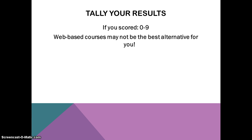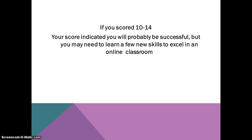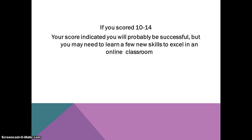Okay, now tally up your results. Count how many times you answered yes and we're going to see how you rate. If you scored 0 to 9, web-based courses may not be the best alternative for you — you might be more suited to a traditional classroom setting. If you scored 10 to 14, your score indicates you'll probably be successful, but you may need to learn a few new skills to excel in an online classroom. And if you scored 15 to 21, your score indicates no serious problems — you appear to possess the skills needed to succeed and are well caught up on modern technology and online distance learning.